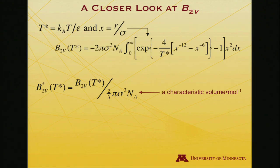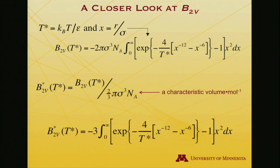Notice that sigma had units of distance. So if I have distance cubed, that's like a volume. To the extent this is substance specific, it can be thought of as equivalent to a characteristic molar volume. That finally simplifies the expression as B star 2V function of T star equals minus 3 and this same integral expression we've seen previously.